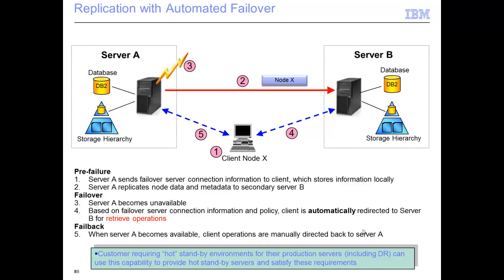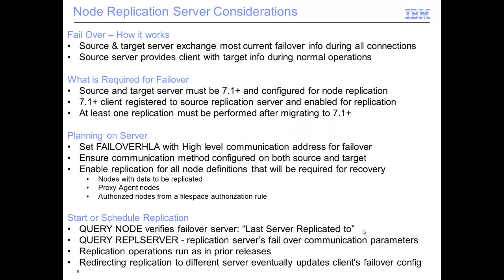In version 7.1, we introduced the concept of automated failover. If a client is backing up to server A, and server A is replicating that node data over to target server B, if there's a failure and server A goes out of commission, the client will automatically communicate with server B to do any restores. This is restore or retrieve data only — this is not for doing additional backups. Once server A comes back online, the client node will then switch back to server A and do its backups and restores to server A.